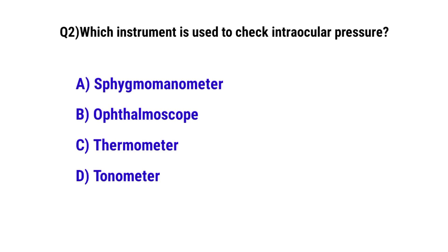Question number 2. Which instrument is used to check intraocular pressure? The correct option is D: Tonometer.